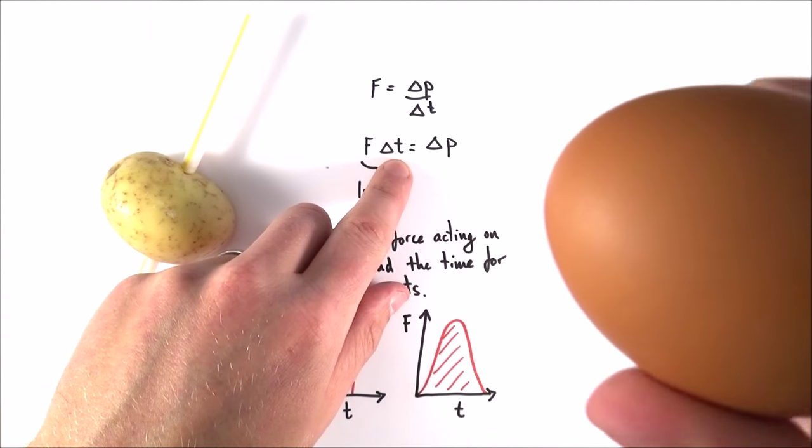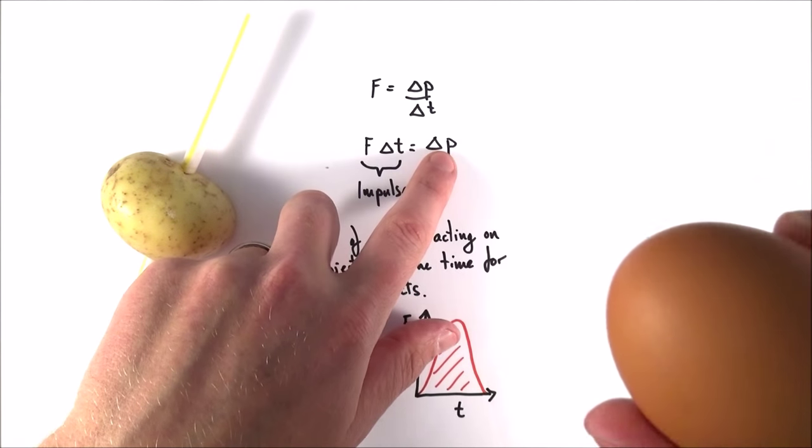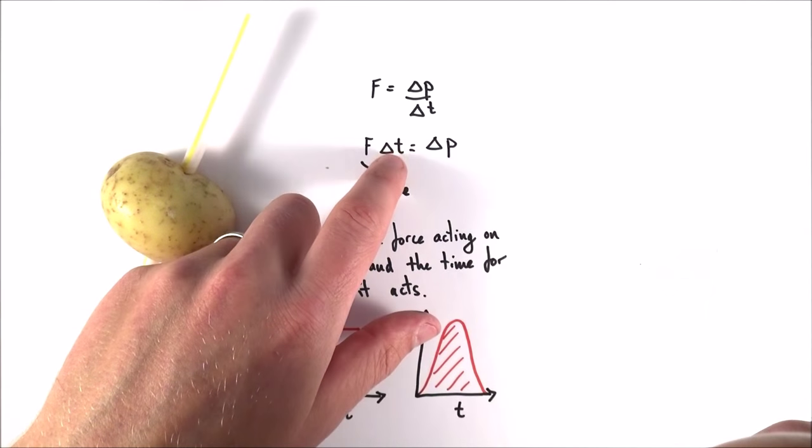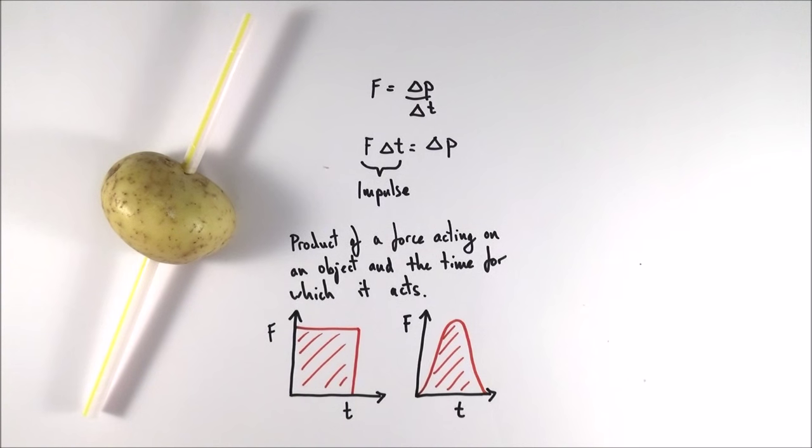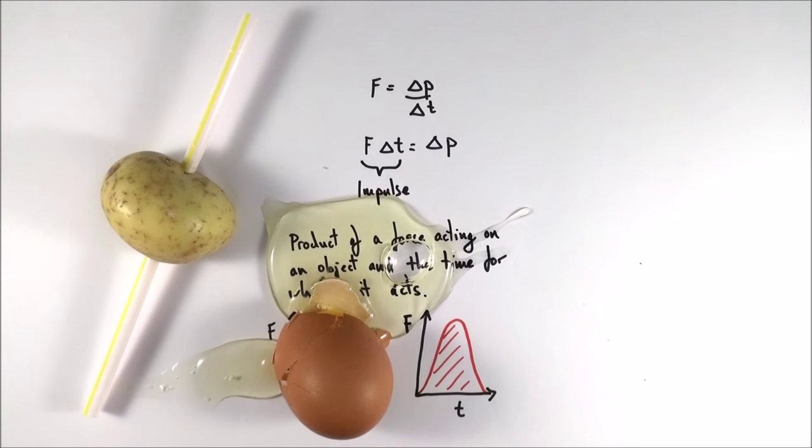It doesn't matter how quickly the egg is going, because the change in momentum of the egg is going to be the same. If you increase the collision time, it means we have a smaller force acting. But if we change that momentum over a smaller amount of time, then the egg will break.